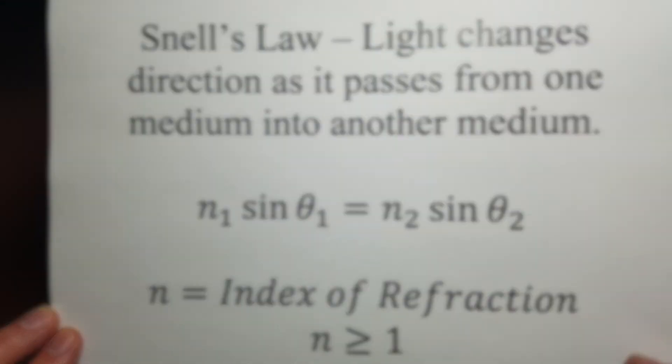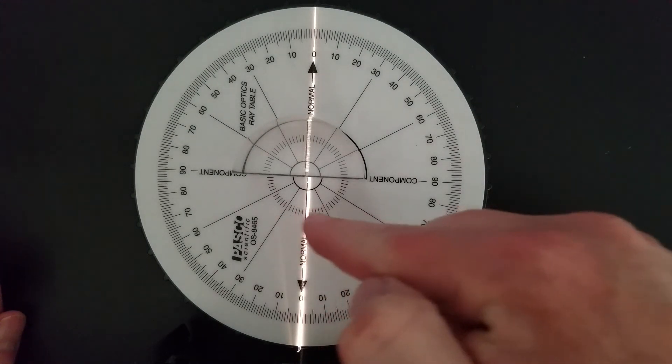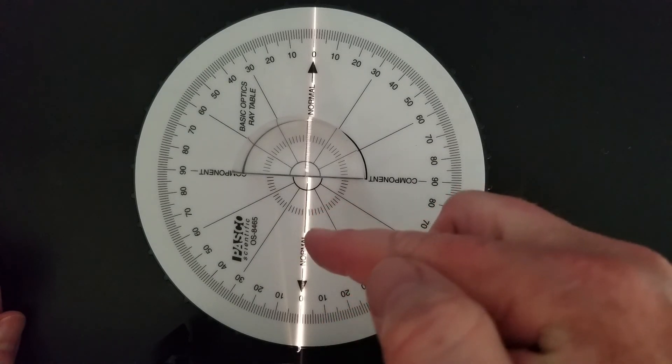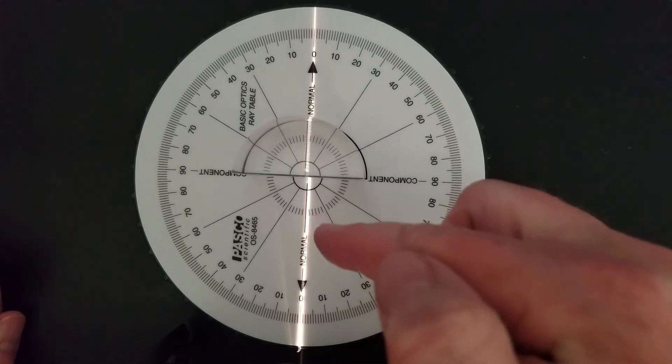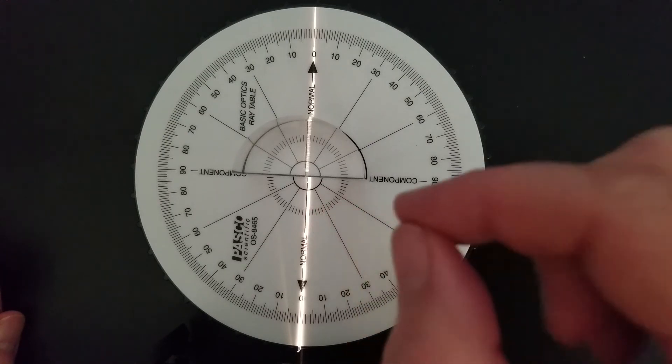All right, now let's get into the lab. Let's do a lab with Snell's Law. Here we've got light in air. Air has an index of refraction of about 1. Technically, it's 1.0003, but for all practical purposes, we can say just 1.